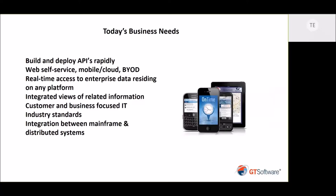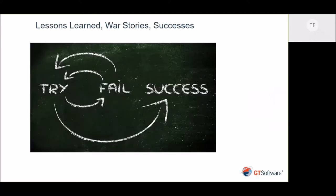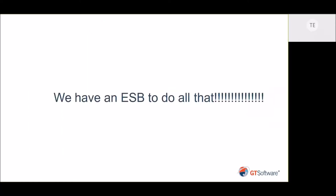We talked to quite a few of our customers and they said they're doing CICS API already. But we asked them how they're doing it, what kind of issues they're having, and what problems they're having. During the discussions we find out there are lots of war stories and lessons learned. Basically it's a trial-and-error scenario where they try and fail, try and fail, and finally have some success. Another thing we hear all the time is, 'We have an ESB, we can do all that.' But are they really, and does the ESB handle all their needs?